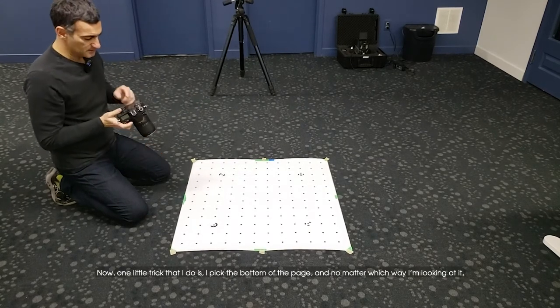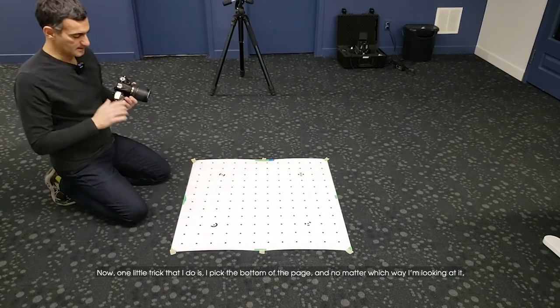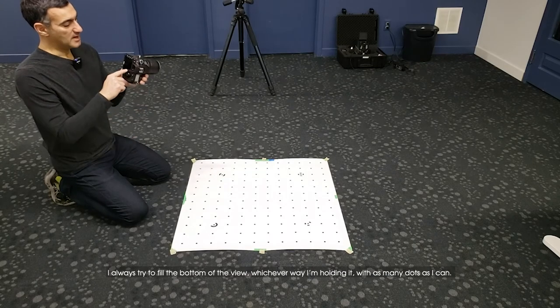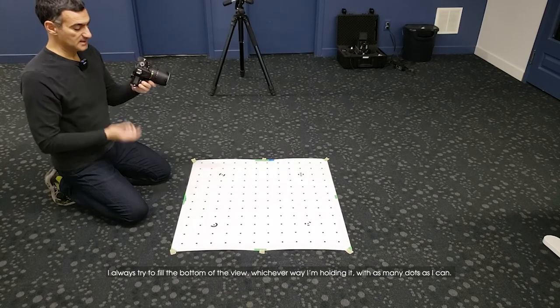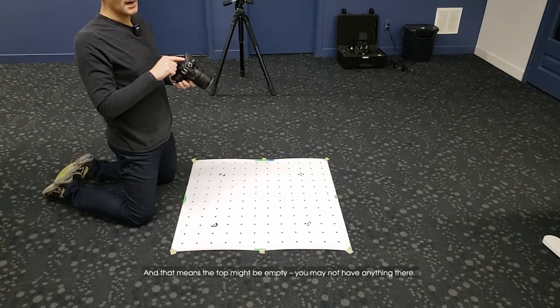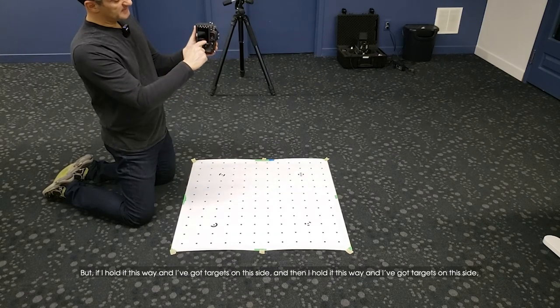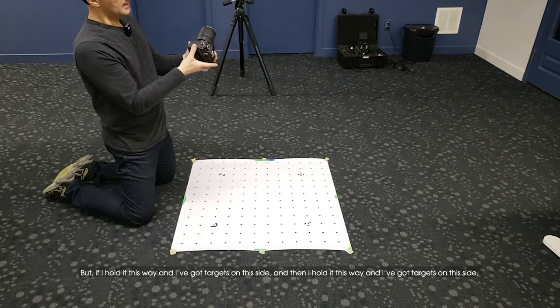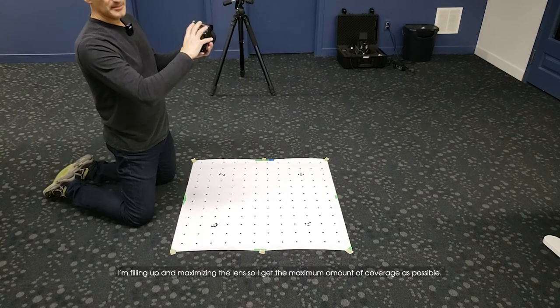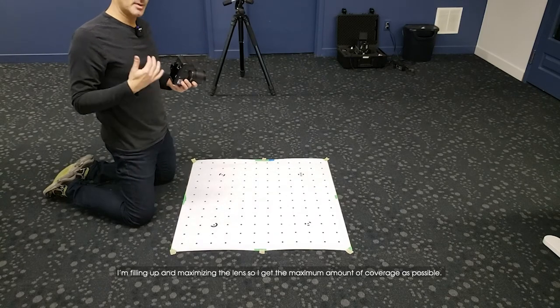One little trick that I do is I pick the bottom of the page, and no matter which way I'm looking at it I always try to fill the bottom of the view, whichever way I'm holding it, with as many dots as I can. That means the top might be empty. By holding it different ways and filling up, I'm maximizing the lens to get the maximum amount of coverage possible.